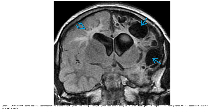Follow-up imaging in the same patient seven years later shows extensive cystic and non-cystic encephalomalacia affecting the left more than right cerebral hemisphere, with associated ex-vacuo ventriculomegaly.